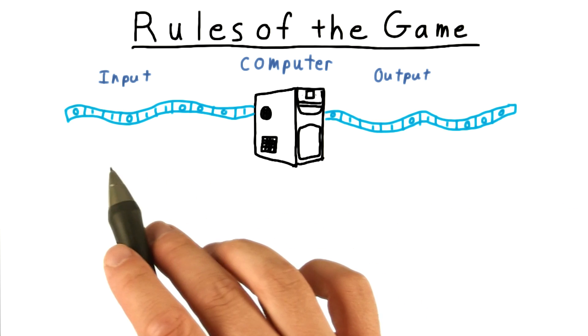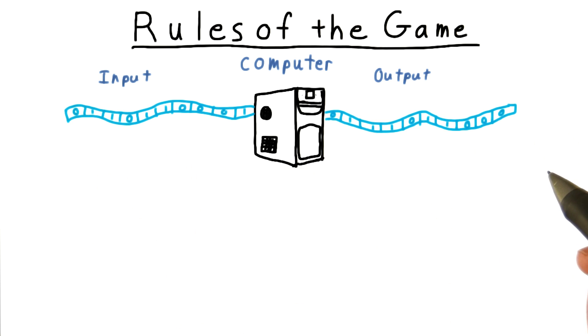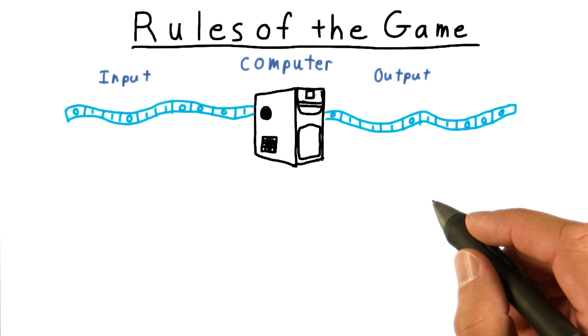In this lesson, we'll focus on the input and output parts of this picture, and postpone the mathematical definition of the machine itself.